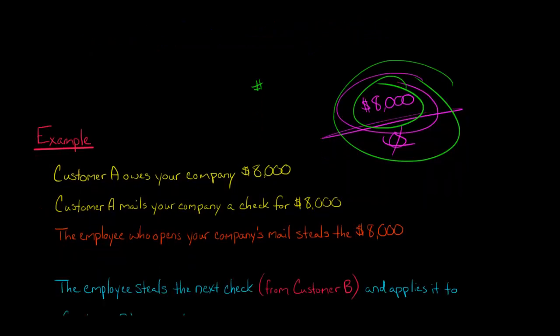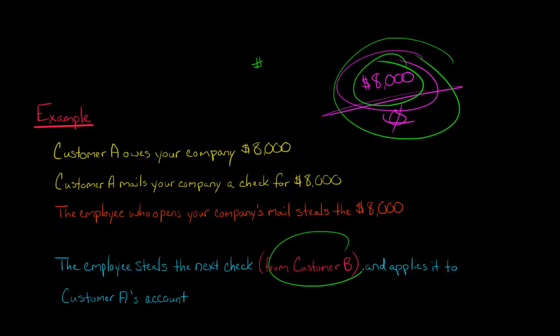So what they do is they get the next check. Okay, so the next check comes in the mail from customer B, and let's say customer B owed $10,000. So they take that $10,000, and they take $8,000 of it and apply it to customer A's balance. So they're stealing now $10,000.